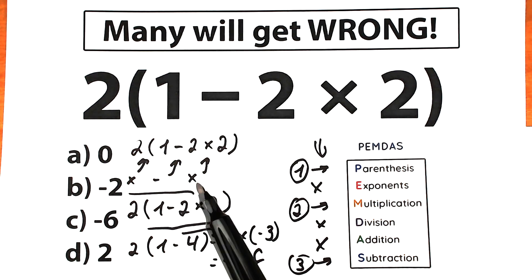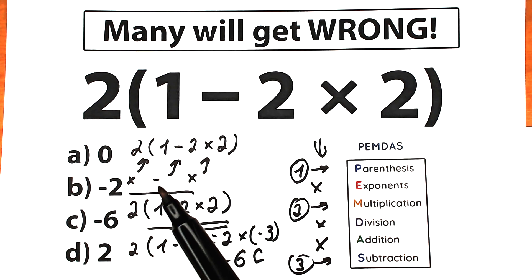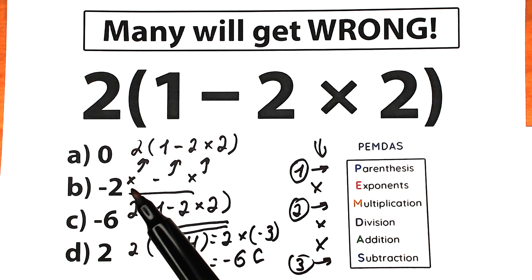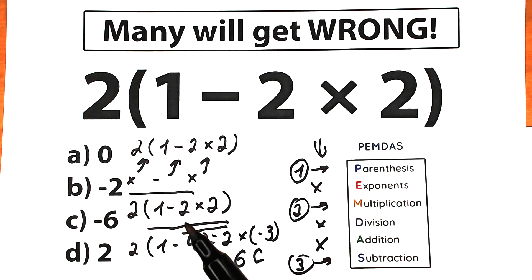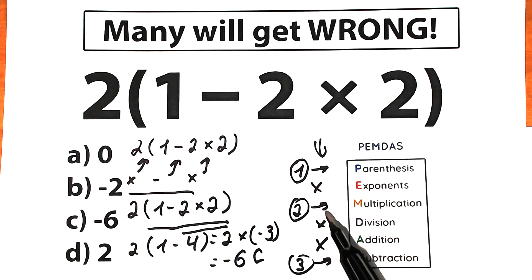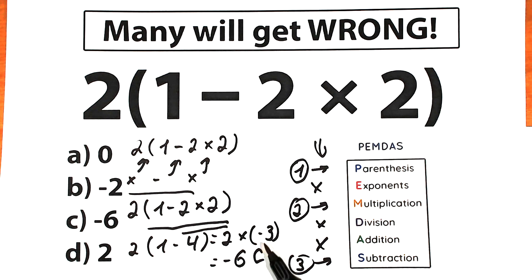We should know what is the correct order, because all the time students make this common mistake — one part starts with subtraction, another part starts with multiplication first. We solved this challenge according to PEMDAS: first we found the parentheses and evaluated the expression inside. Inside we had subtraction and multiplication — we multiplied first because multiplication has higher priority. 2 times 2 equals 4, then 1 minus 4 equals minus 3. Finally, 2 times minus 3 equals minus 6. This is option C — the correct answer.